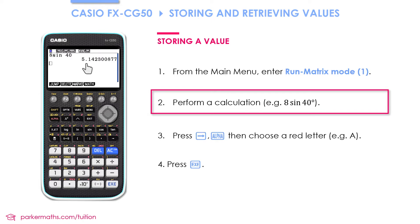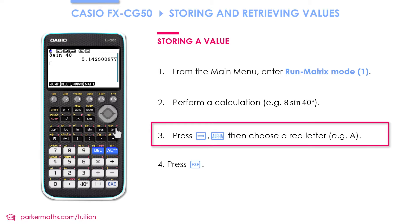Suppose I want to use this value in a later calculation. To store it I press the arrow button and then I need to choose a letter. To choose any of the red letters you can see on your calculator from A down to Z, I first press alpha and then I choose my letter, for example A.